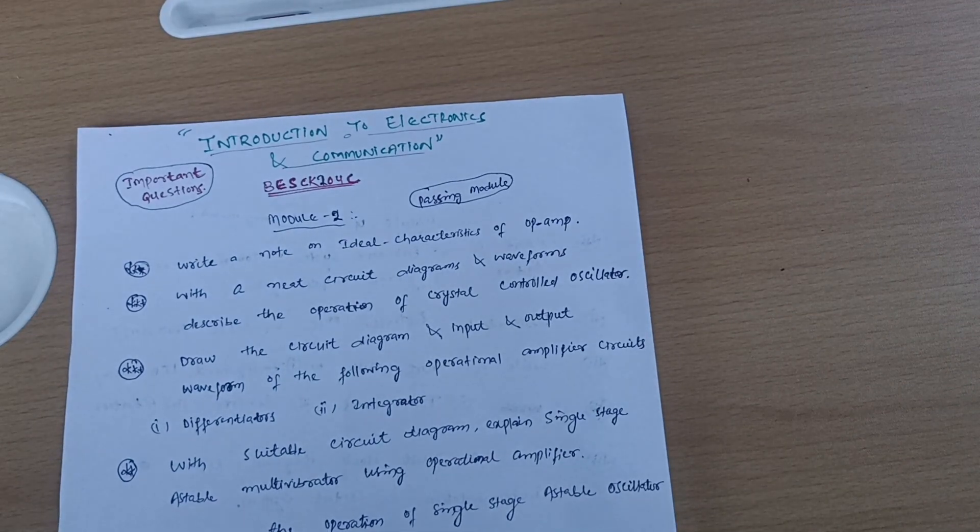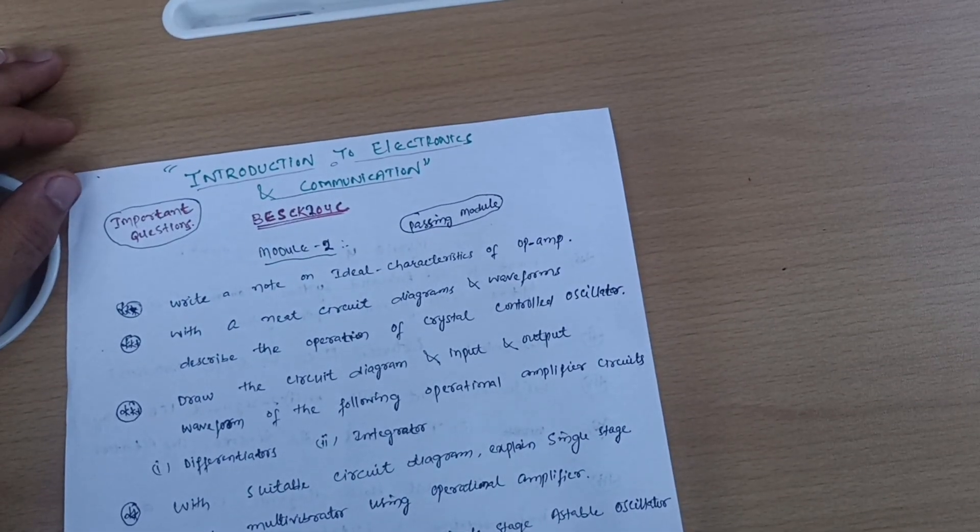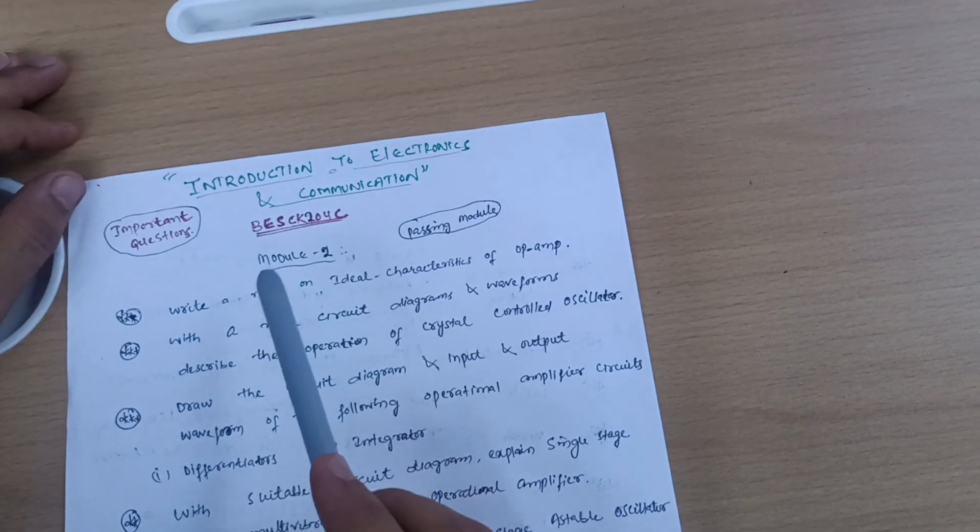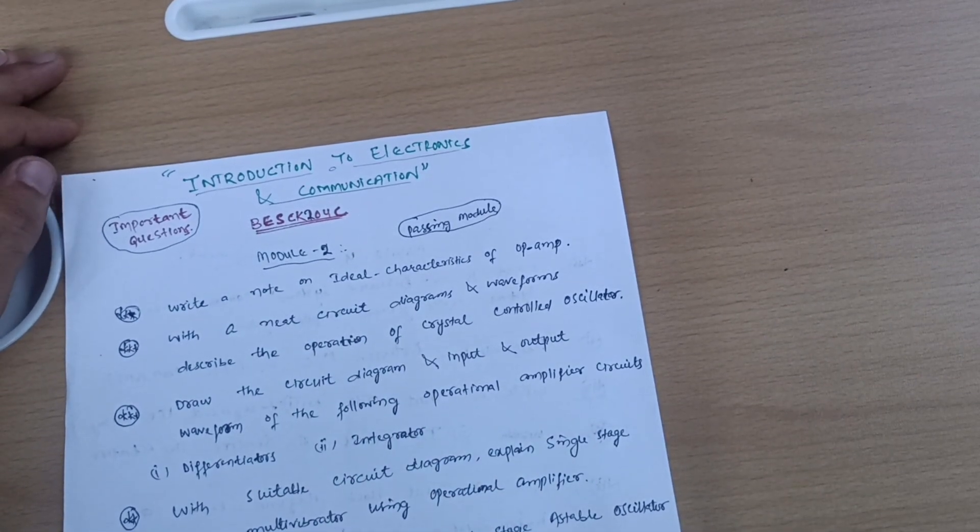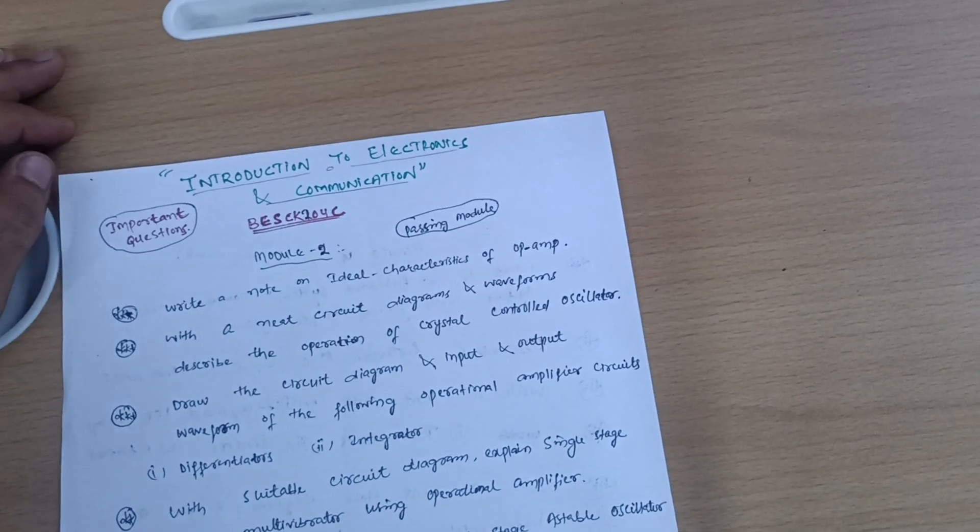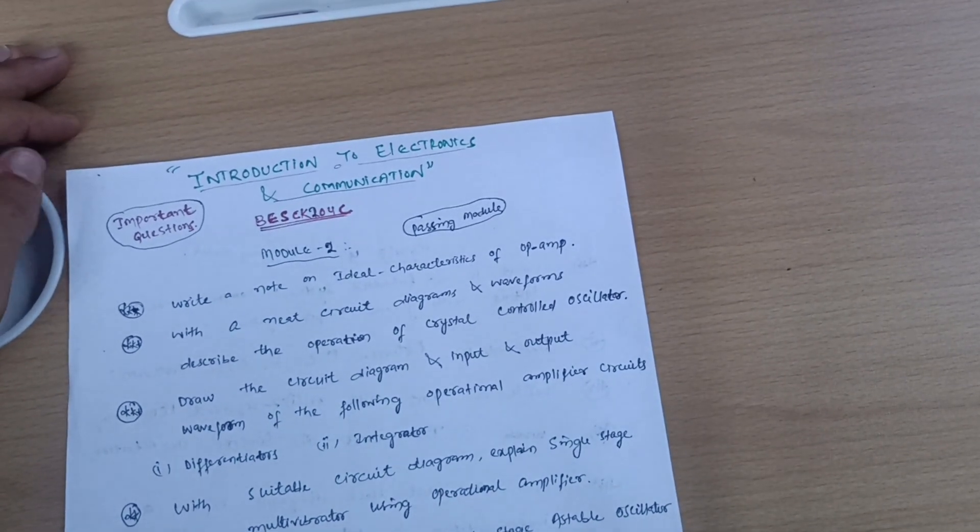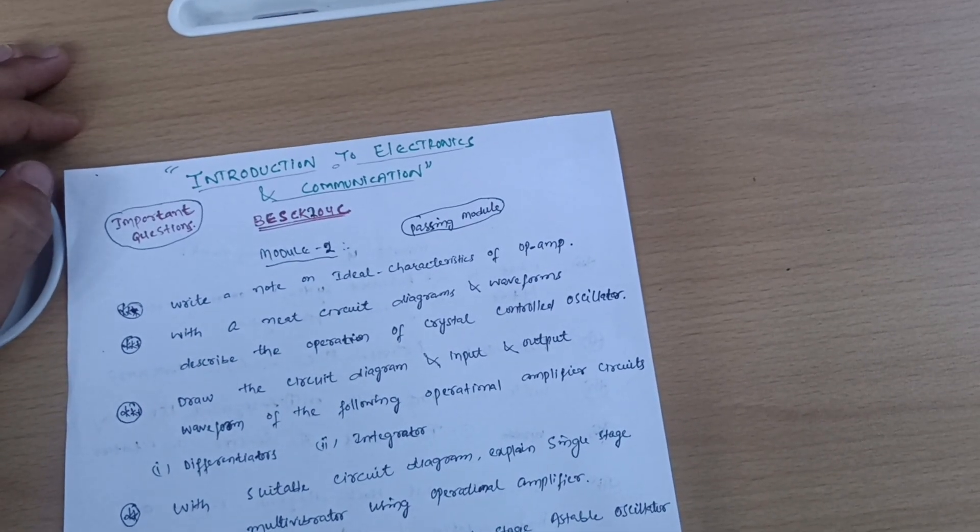Hello everyone and welcome back to my channel. Hope you are all doing well. This is the subject Introduction to Electronics and Communication, subject code BES-CK-204C or 104C for those with backlogs. As second semester examinations are near, this is particularly for second semester students. I will discuss some important questions in this video.